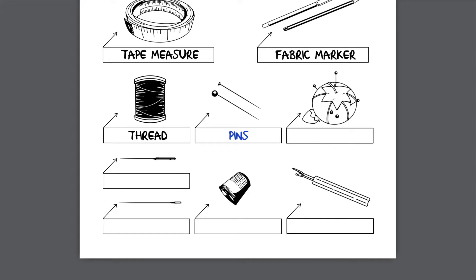Another method of using the seam ripper, once you get started, is to gently pull the two layers of fabric apart so you can see the stitches from the inside. You can cut the stitches with the U-shaped blade, then gently pull the fabric apart more and cut again. Repeat this process until all of the stitches are out. Label the seam ripper on your study guide.